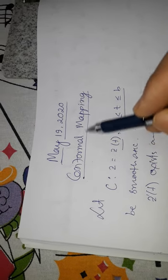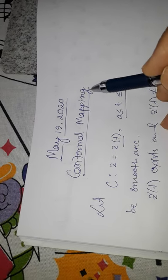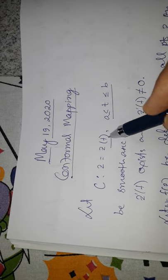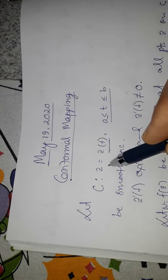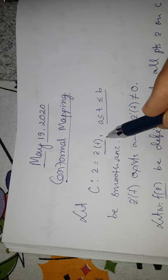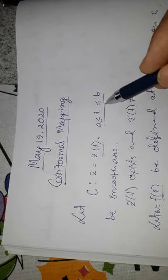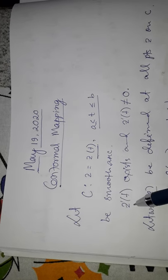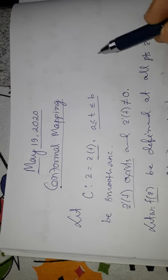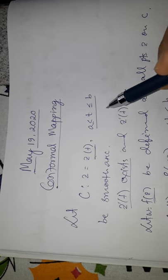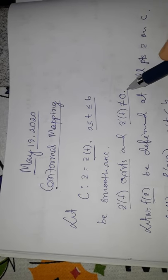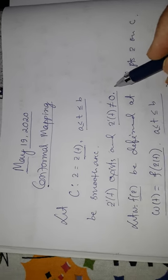I would like to discuss conformal mapping. Let c be a smooth arc with the parametric representation z = z(t), where the parameter t lies between a and b. This is a smooth arc, and by smooth we mean that z'(t) exists in the open interval (a, b) and z'(t) is never equal to zero.